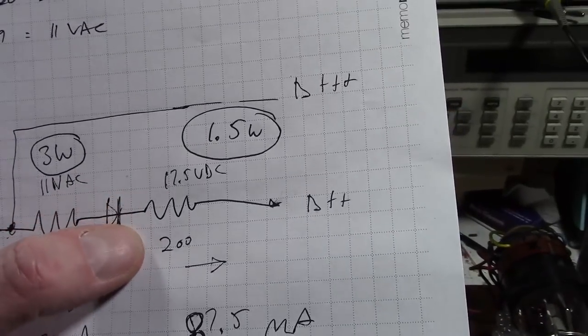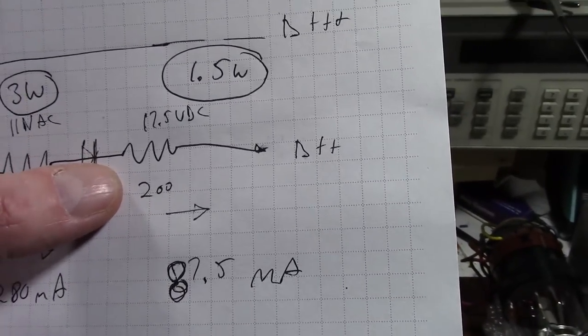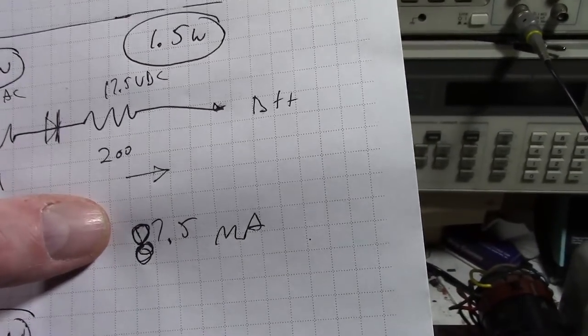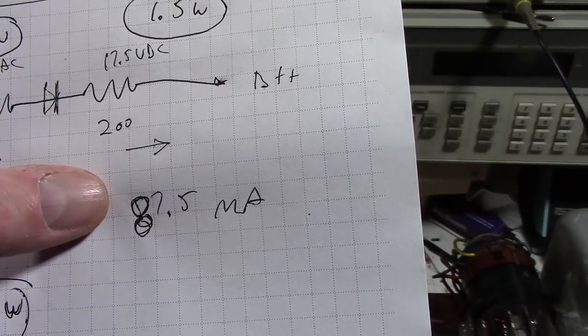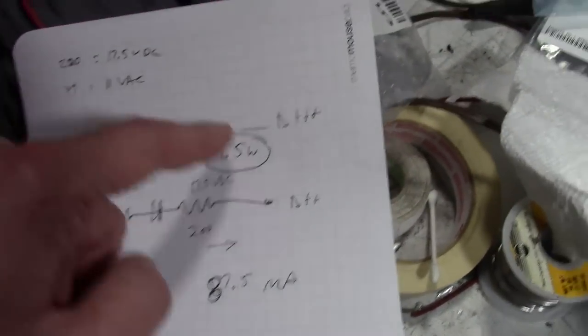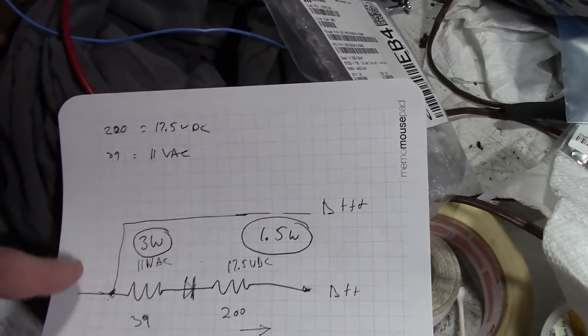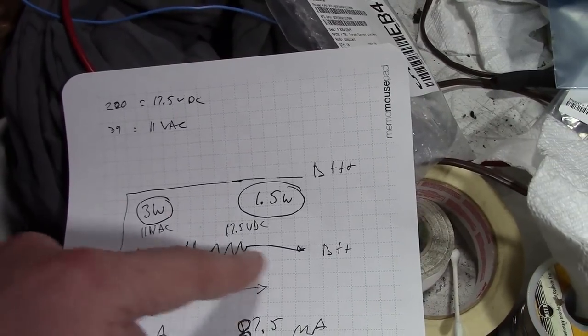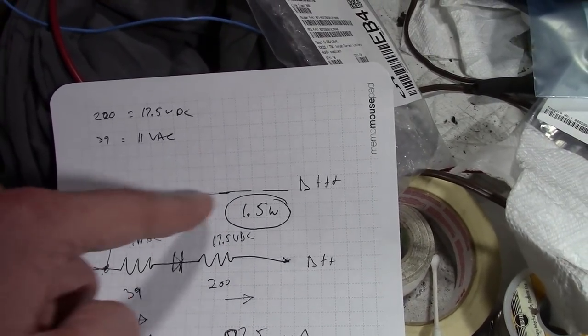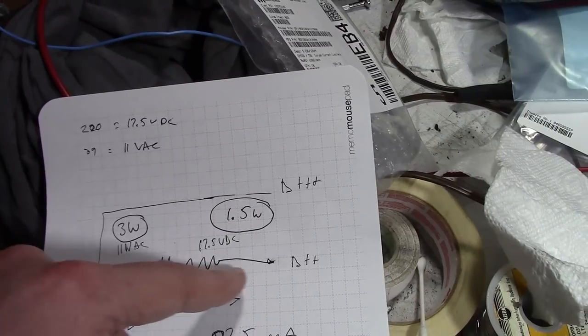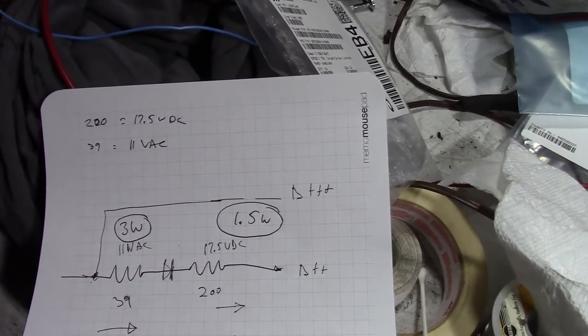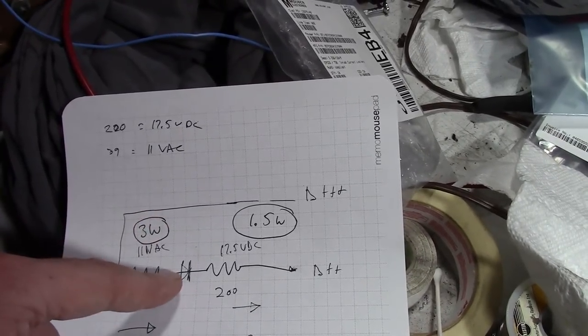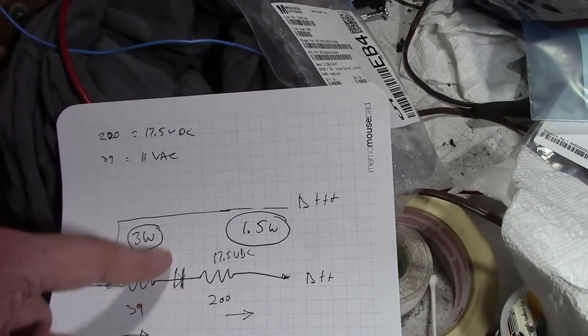Now, what about the other resistor, the 200 ohm, which feeds B++? That only had 17.5 volts DC across it, which translates to 87.5 milliamps. So, for lack of a better term, I'm calling this B+++. That has quite a bit of current going through it. And, it's about 200 milliamps going up here, and only about 87.5 going through here. So, no wonder that resistor was getting toasty. I just realized I have that line on the wrong side, actually. That should be over here, going up that way.